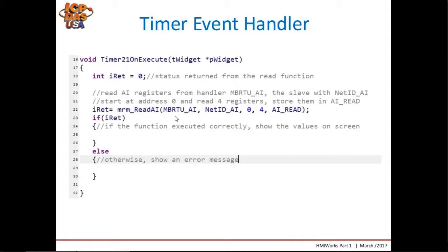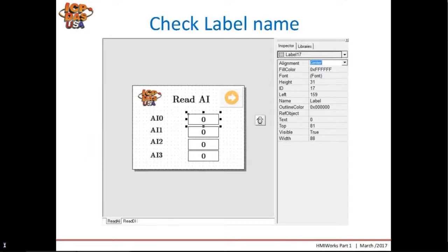The function to read analog inputs with Modbus RTU is MRM_Read_AI. The API PDF shows the parameters needed for the function. It will read AI registers from handle MBRTU_AI, from the slave with NetID_AI. It will start at address 0, read 4 registers, and store the resulting values in the array AIRead. After the read operation, we check the value of iRead. The statement 'if (iRead)' is the same as 'if iRead is equal to true', meaning the read was successful — in which case we write code to show the values in the labels. Otherwise, if iRead equals false, we show error messages.